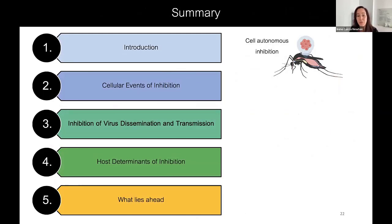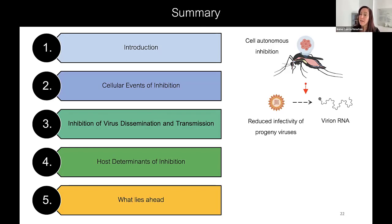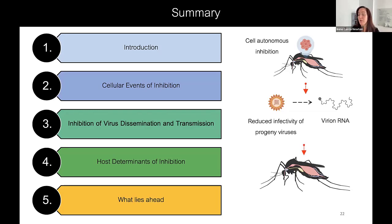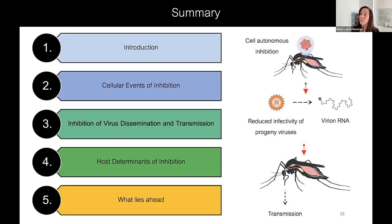Wolbachia mediates pathogen blocking in a cell-autonomous way — Wolbachia has to be inside the cells to abrogate virus replication. But virions produced by Wolbachia-infected cells are less infectious, meaning those particles can't initiate a new round of infection in a neighboring cell, effectively protecting the rest of the animal. The mosquito has to acquire the virus, disseminate around the tissue, and transmit to another vertebrate — at every step, if Wolbachia is present in any cell the virus encounters, there is a decrease in the ability of the virus to replicate.